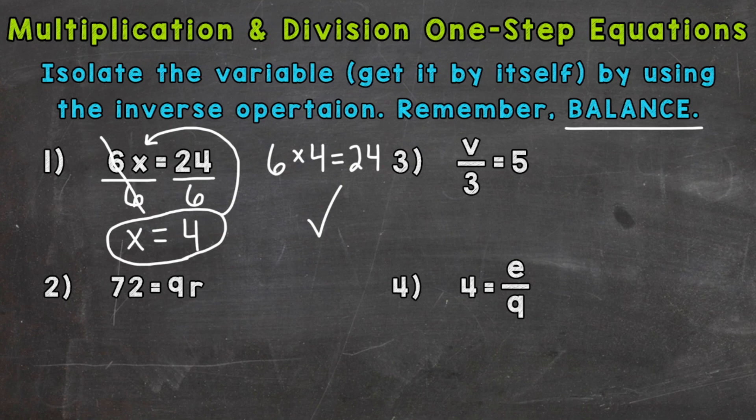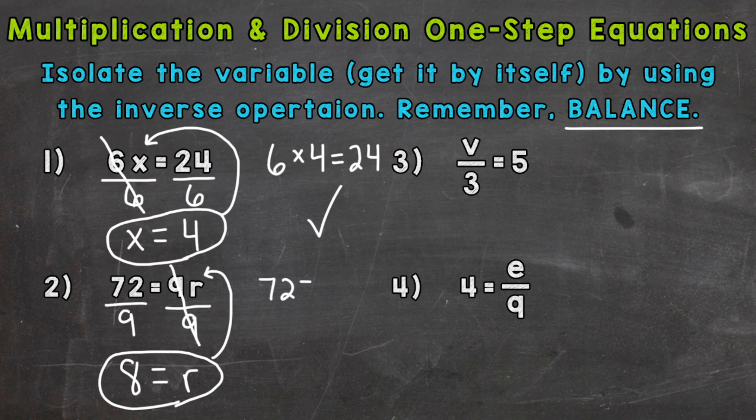Now on to number two, which looks a little different than number one, because we have the 72 on the left and the 9 times r on the right. So the variable is on the right, but we use the same exact process. So we need to isolate the r. We're multiplying the r by 9. So the opposite would be dividing by 9. Now those 9s cancel out and give us one r, which we can express by just writing the r by itself. So the r is isolated. Whatever we do to one side, we have to do to the other. So 72 divided by 9 equals 8. So we're left with r equals 8. And we can plug back in here to see if this is true. So 72 equals 9 times 8, which is true.